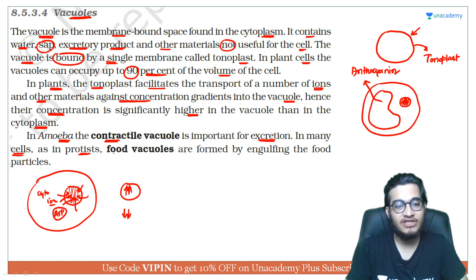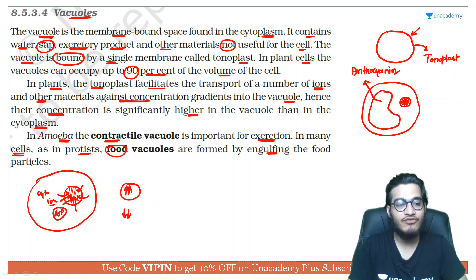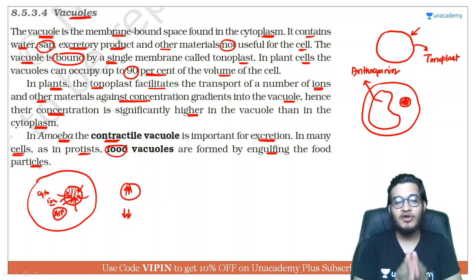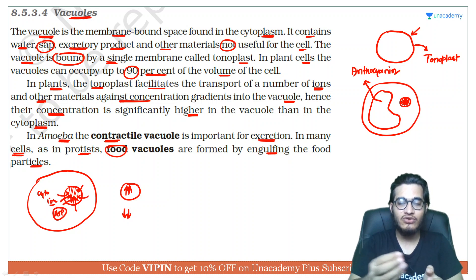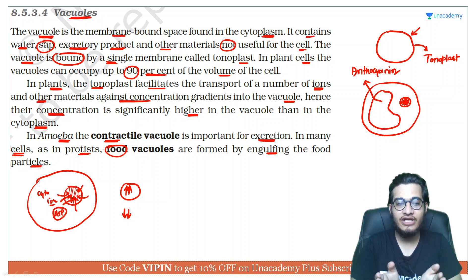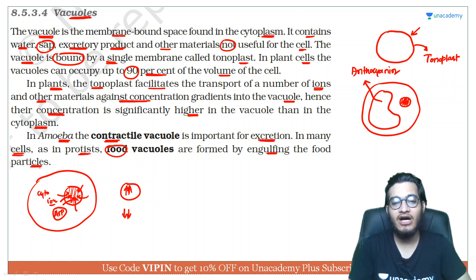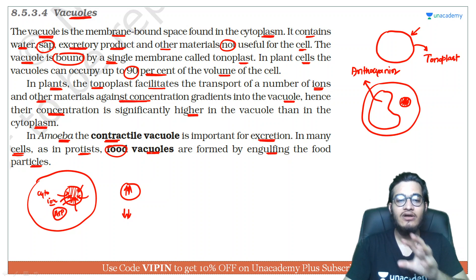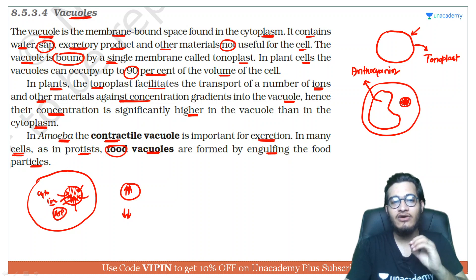In many cells, as in the case of Protista, food vacuoles are formed by engulfing food particles. Ye jo protists hote hain, jo unicellular eukaryotes hote hain, jab ye kisi food particle ko khaate hain, toh wo food particles ikatthe ho jaate hain aur food vacuole bana lete hain — aisi jagah jahan poore cell ka food concentrated ho jaata hai.